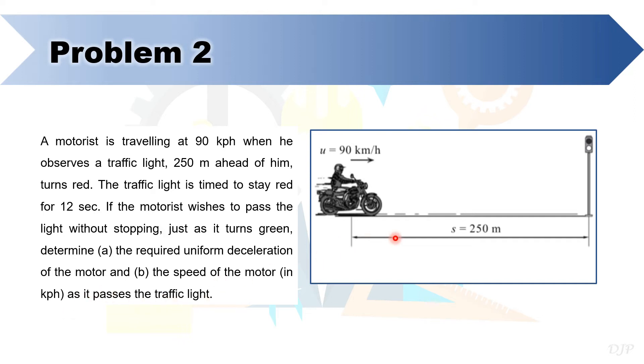So basically class, the event in problem 2 is the motorist wants to pass the traffic light without stopping. Since the traffic light will stay red until 12 seconds, the motorist should time it so he reaches the traffic light at exactly 12 seconds, so that when he arrives, the traffic light will turn green.